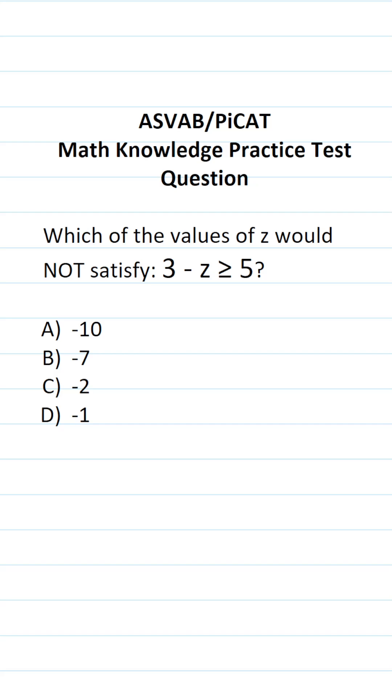This math knowledge practice test question for the ASVAB and PiCAT says, which of the values of z would not satisfy 3 minus z greater than or equal to 5? In other words, we're going to be solving this inequality.